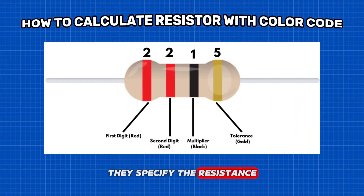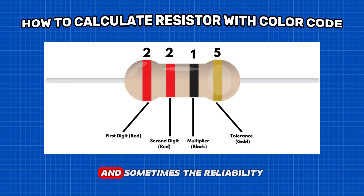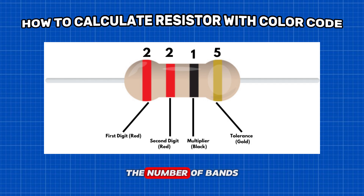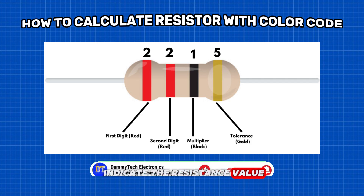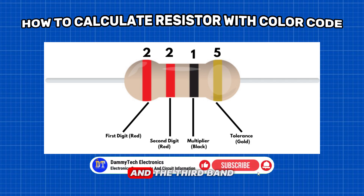They specify the resistance, tolerance, and sometimes the reliability or failure rates. The number of bands present in a resistor varies from 3 to 6. The first two bands indicate the resistance value, and the third band serves as a multiplier.